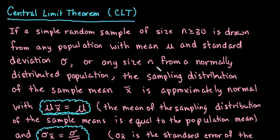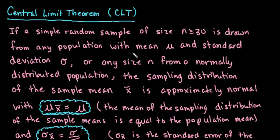In this video I want to discuss the central limit theorem. The central limit theorem says that if a simple random sample of size n greater than or equal to 30 is drawn from any population — skewed left, skewed right, symmetric, any population — with a certain mean mu and standard deviation sigma, or if you're starting with a normally distributed population, then you can use any size of n.